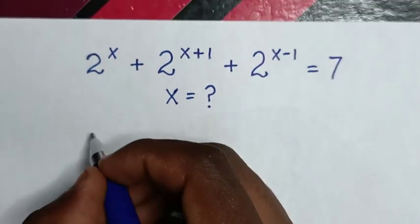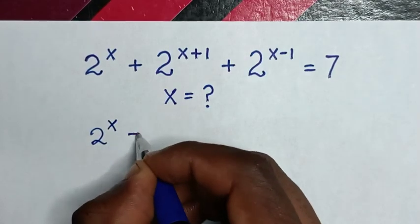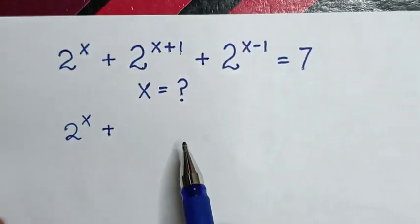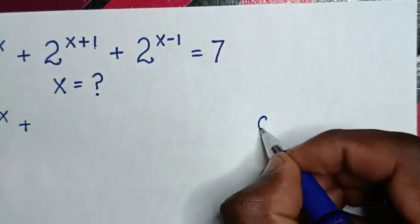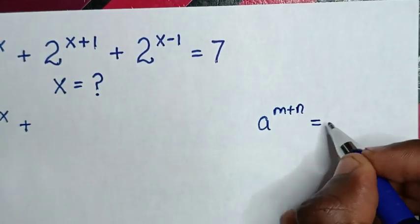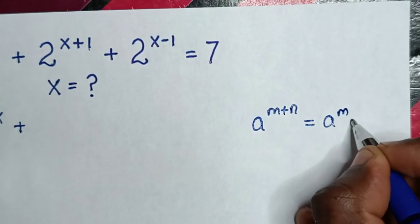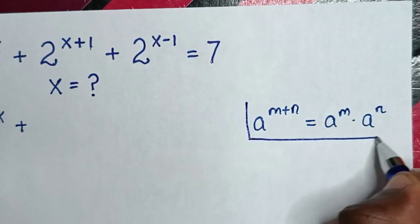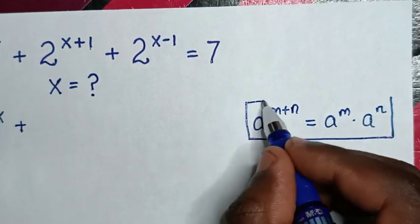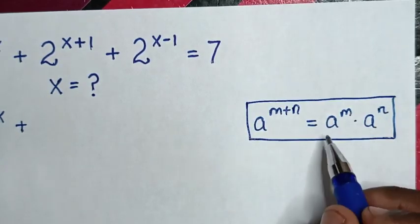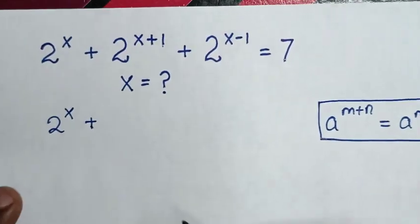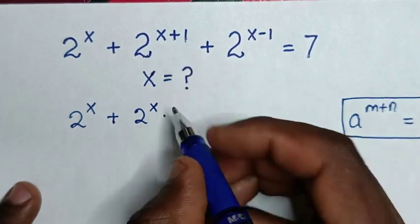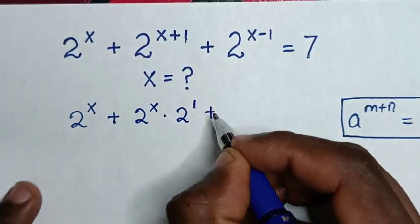So from here, 2 power of x, then plus 2 power of x plus 1. We will apply the exponential rule that a power of m plus n is equal to a power of m times a power of n. So it will be multiplication of exponents, which is 2 power of x times 2 power of 1.